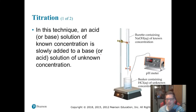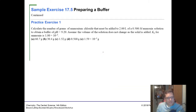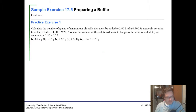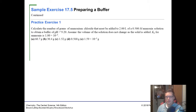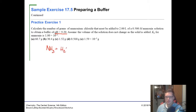Now let's do what I think tend to be the hardest types of problems: calculating how you would make a buffer for a specific pH. We're calculating the number of grams of ammonium chloride that must be added to two liters of a 0.5 molar ammonia solution to obtain a buffer of pH 9.20. Since they give us Kb, this is a weak base problem — ammonia reacts with water to form ammonium NH4+ and hydroxide.